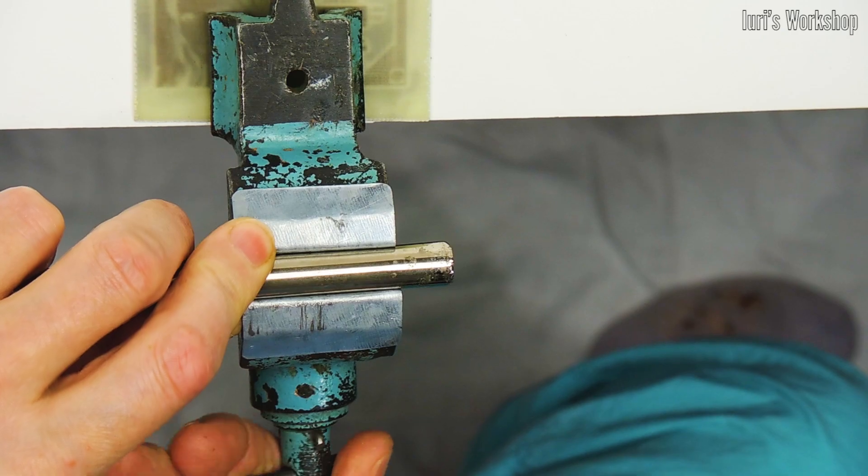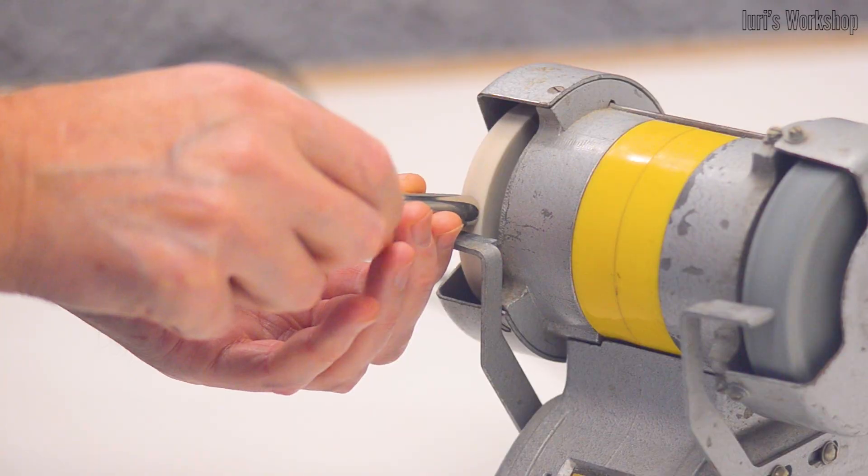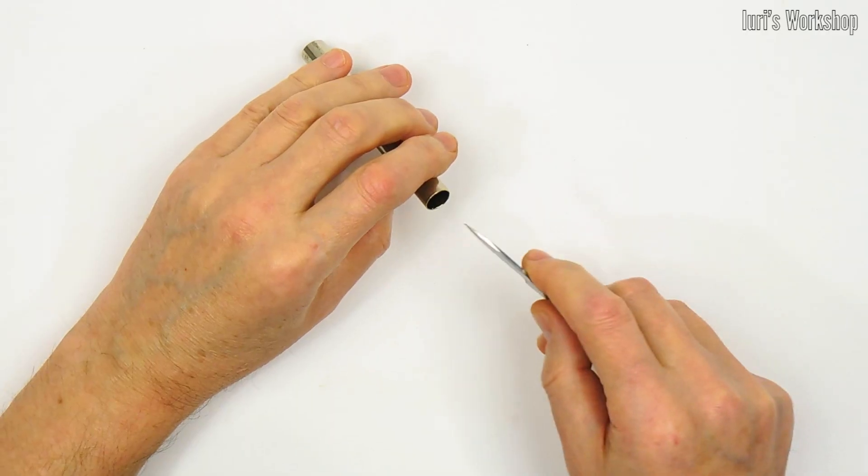Let's first cut the blank for the body of our burner, according to the drawing. Then we can trim the cutting site, and remove the burrs.